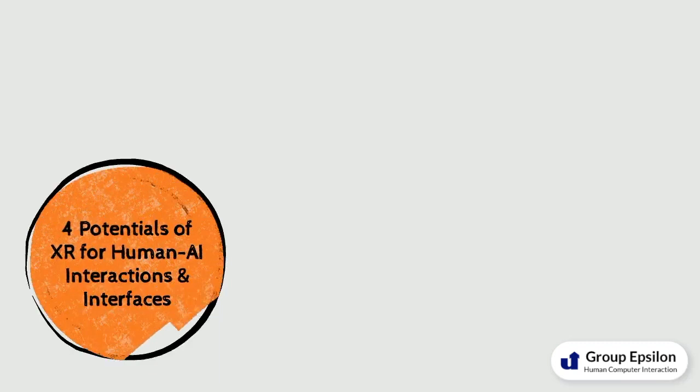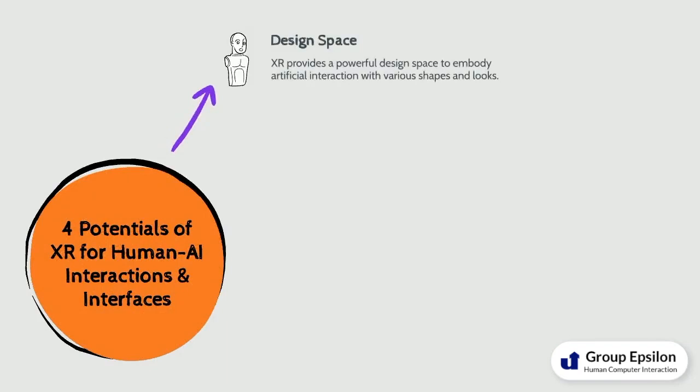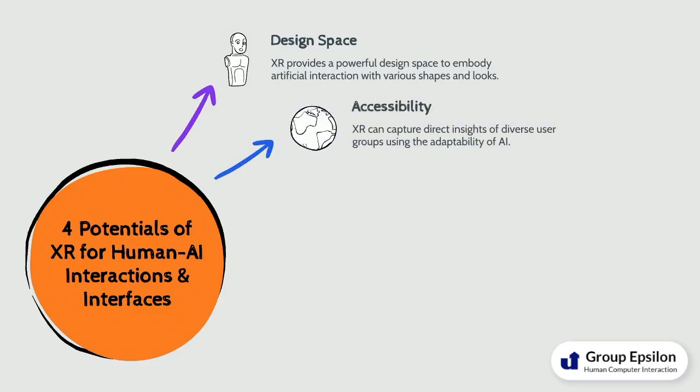As a new testbed for human-AI interactions and interfaces, XR provides four potentials. In the design space, XR provides a powerful space to embody artificial interaction partners with various shapes and looks, from simple non-animated devices to anthropomorphic counterparts without being restricted to physical boundaries and engineering challenges. In accessibility, XR can capture direct insights of diverse user groups, since AI systems can be easily adapted to the degree or other human-centered features.